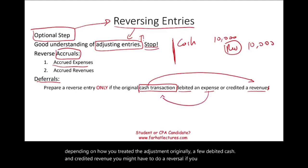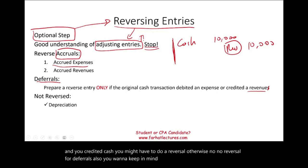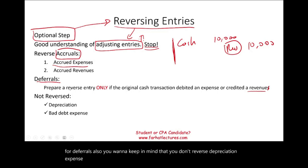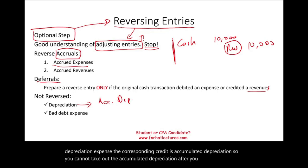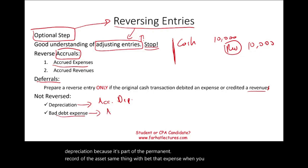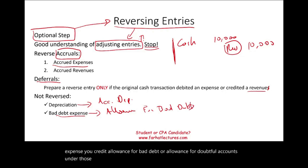If you debited expense and credited cash, you might have to do a reversal. Otherwise, no reversal for deferrals. Also, you don't reverse depreciation expense and you don't reverse bad debt expense. Why? Because when you debit depreciation expense, the corresponding credit is accumulated depreciation — you cannot remove accumulated depreciation because it's part of the permanent record of the asset. Same with bad debt expense: when you debit bad debt expense, you credit allowance for doubtful accounts, and you don't back that out.